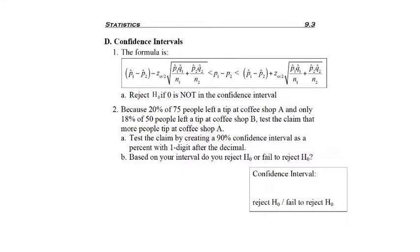Coffee shop A is mentioned first, so shop A, our first population or p1, starts with 20%. So p-hat 1 is 0.2. Remember, percentages should always be changed to decimals for calculations. Out of 75 people meant n1 was 75.